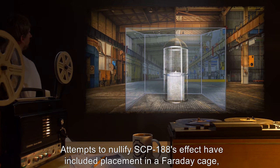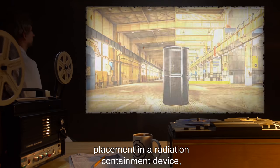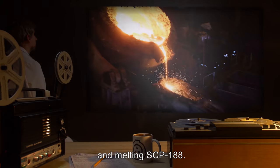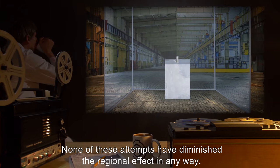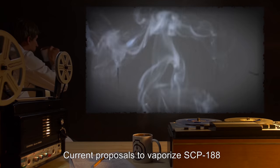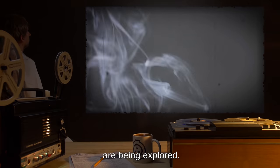Attempts to nullify SCP-188's effect have included placement in a Faraday cage, placement in a radiation containment device, powdering, and melting SCP-188. None of these attempts have diminished the regional effect in any way. Current proposals to vaporize SCP-188 and recondense small portions of the vapor are being explored.